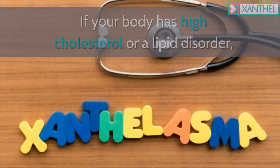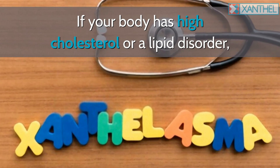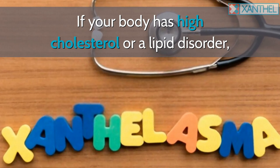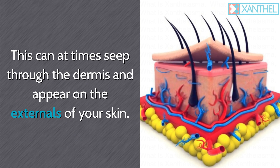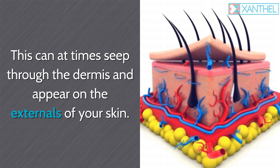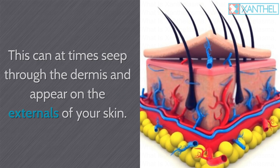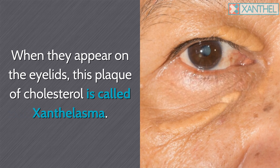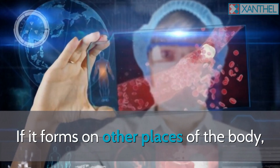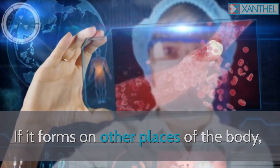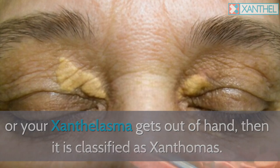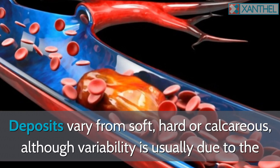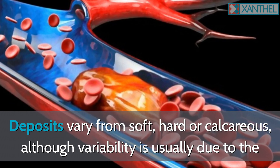What is xanthelasma? If your body has high cholesterol or a lipid disorder, it will cause too much cholesterol in your body. This can at times seep through the dermis and appear on the externals of your skin. When they appear on the eyelids, this plaque of cholesterol is called xanthelasma. If it forms on other places of the body, or your xanthelasma gets out of hand, then it is classified as xanthomas.